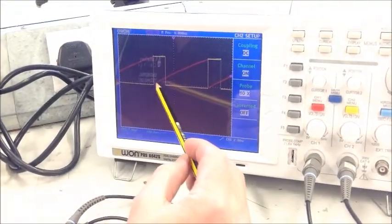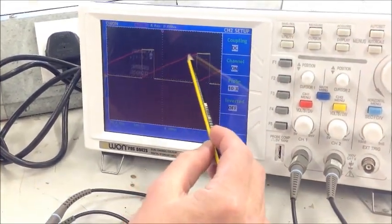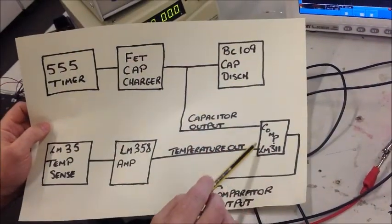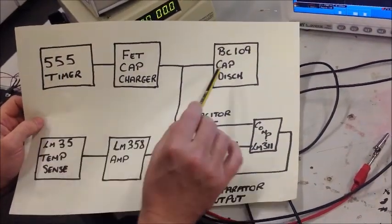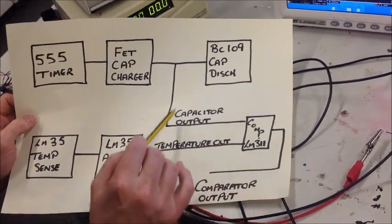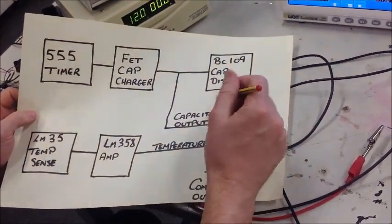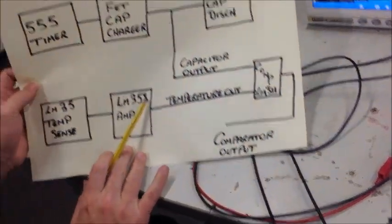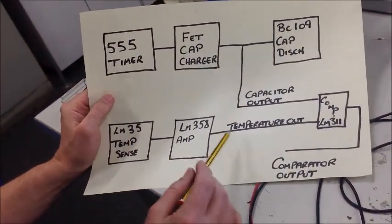And effectively what happens is we get this output waveform here fed eventually to a comparator on my block diagram there. So all of this provides one ramp waveform, as you've seen there, to this comparator. And the other part, the other side of the circuit...